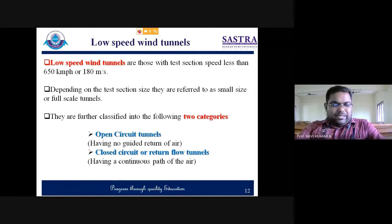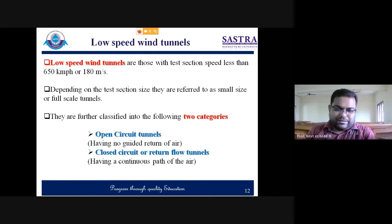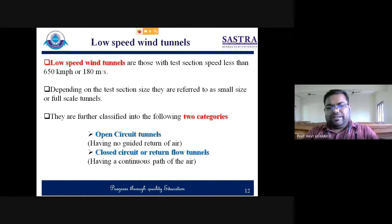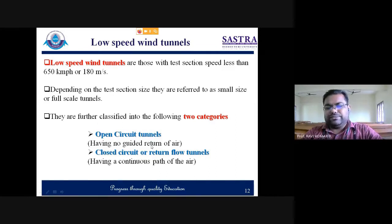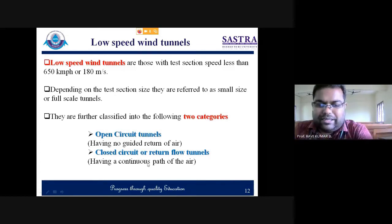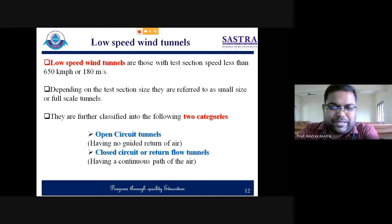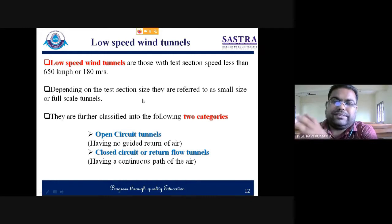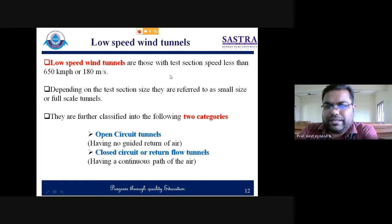Low speed wind tunnels can be subdivided into two categories based on flow behavior. First is the open circuit tunnel — no guide vanes are required because flow enters and leaves the tubular section directly, so losses are less. Second is the closed circuit or return flow tunnel, which requires guide vanes to avoid losses, but provides continuous flow circulation once established. Based on size they can also be divided into full-scale and smaller scale tunnels. Keep in mind that any test section velocity less than 0.9 Mach is considered low speed.